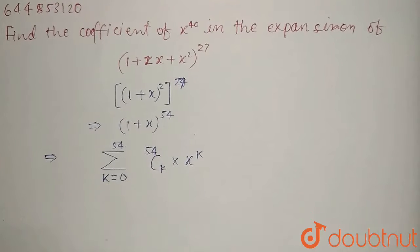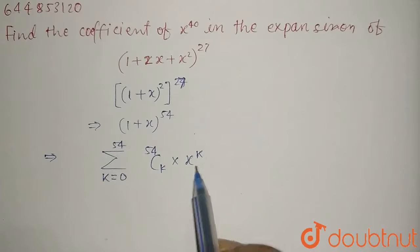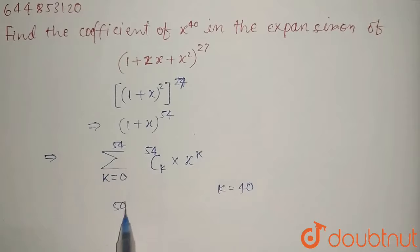Now we have to find the coefficient of x to the power 40. So we will put k equals 40. From here we will get 54 C 40.